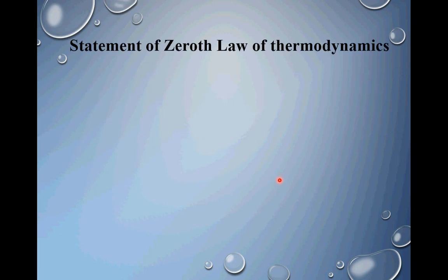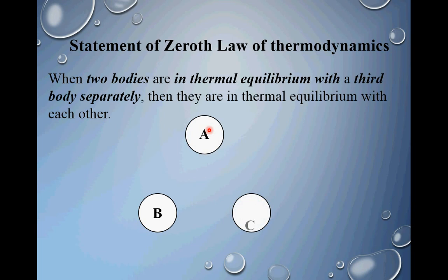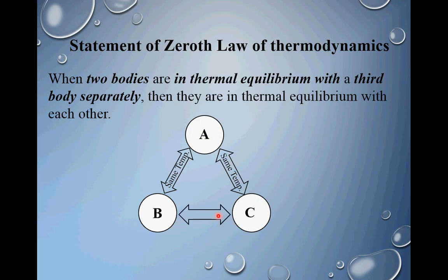The statement of zeroth law of thermodynamics: when two bodies are in thermal equilibrium with a third body separately, then they are in thermal equilibrium with each other. That is, if you have body A, body B, and body C, and body A is in thermal equilibrium with B having the same temperature, and separately A is in thermal equilibrium with C, then B and C will also be having the same temperature as per the zeroth law of thermodynamics.